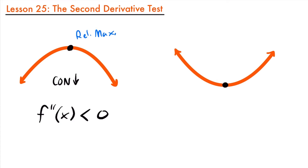What we find here is that if your function has a critical value where the slope is zero, and the function is concave down at that point, meaning that the second derivative is less than zero, then that critical value is going to be a relative maximum.